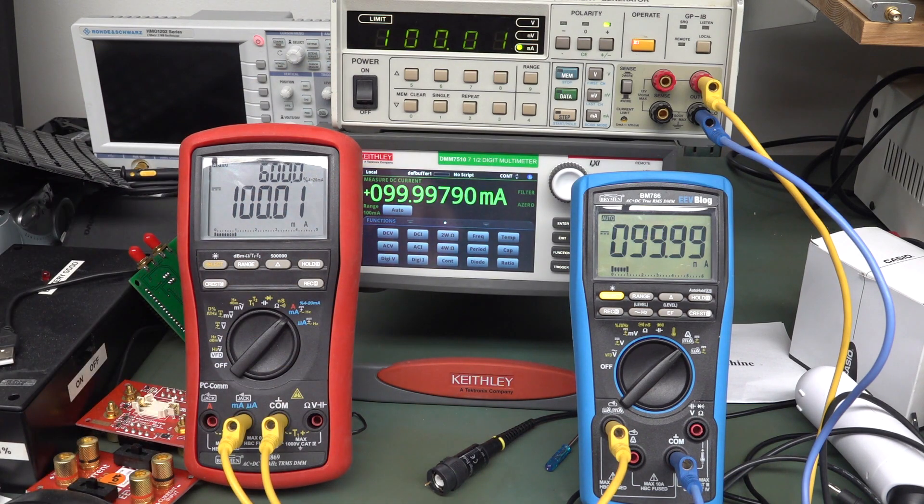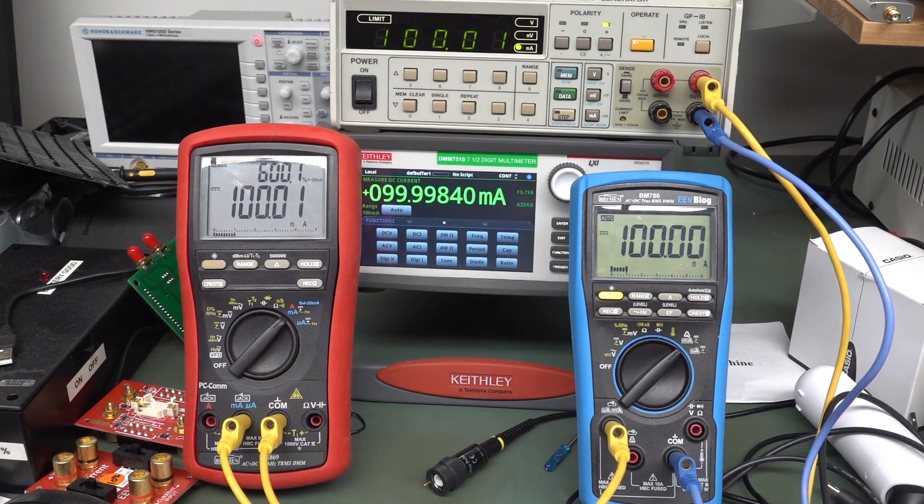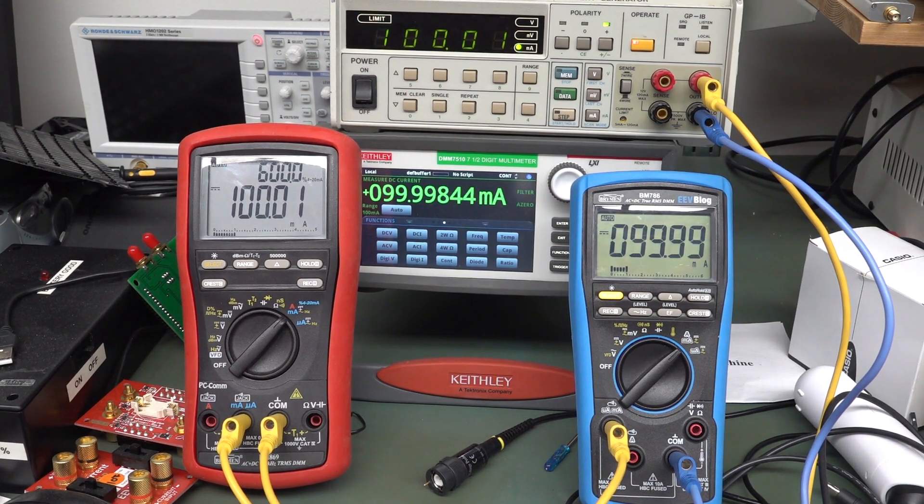Anyway, somebody wanted me to just do that test there. So it's interesting that the 786 actually has a very significantly better spec and burden voltage on DC current, at least. Anyway, catch you next time.